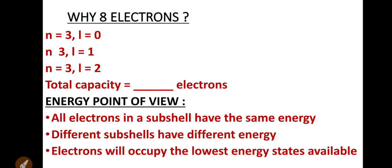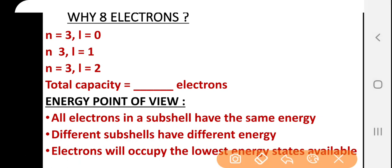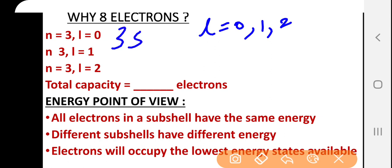Look at the third shell where N equals 3. N equals 3 can have three L values: 0, 1, and 2, so the third shell has three sub-shells. When N equals 3 and L equals 0, we are talking about the 3S sub-shell. The 3S sub-shell has a single orbital, as defined by its ML values — since L equals 0, ML ranges from minus 0 to plus 0, giving just one orbital. A single orbital can accommodate at most 2 electrons.